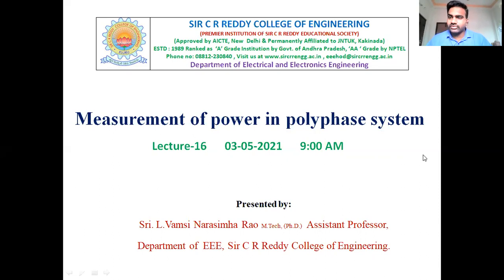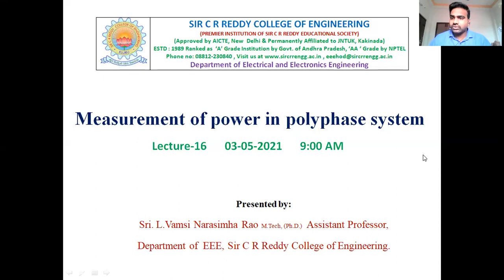The UPF wattmeter measures power at high resistive circuits. The LPF wattmeter measures power at low power factor circuits. That is the difference between the two types.